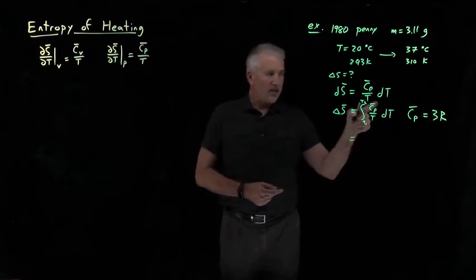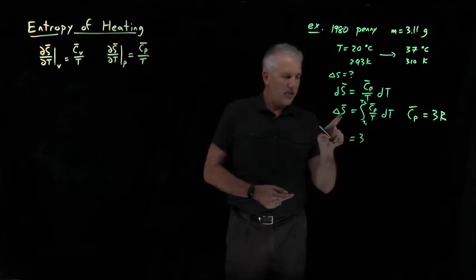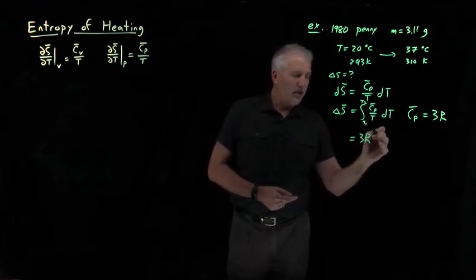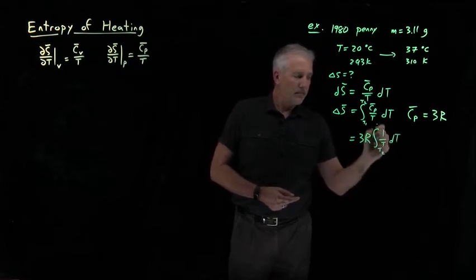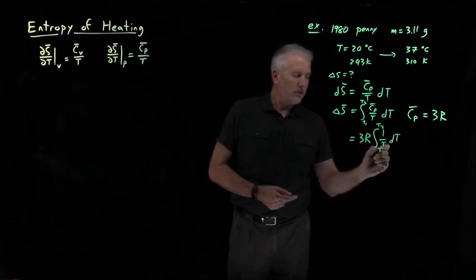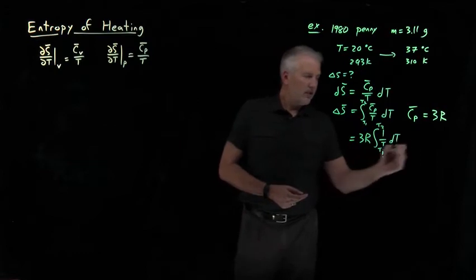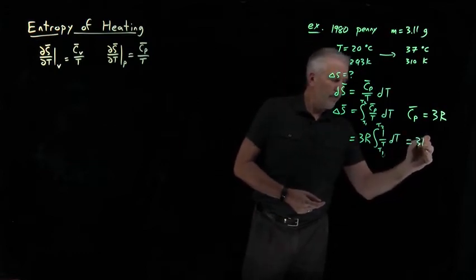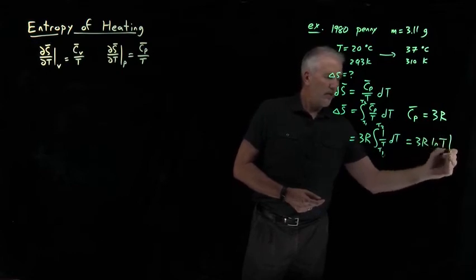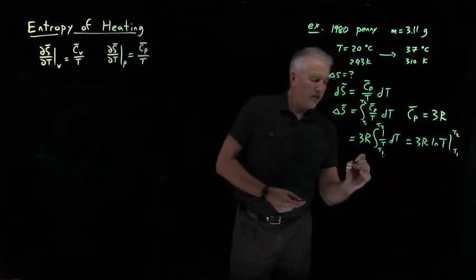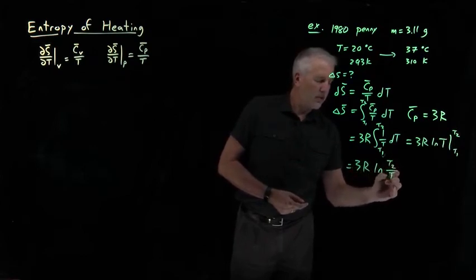So we can use that as our estimate of the heat capacity. So 3R is just a constant, and since the heat capacity is constant, I can pull it out of the integral. So I would have the entropy being 3R times the integral of 1 over T dT, integrated from T1 to T2. And if I evaluate that from T1 to T2, that will give me 3 times R times the natural log of that ratio, T2 over T1.